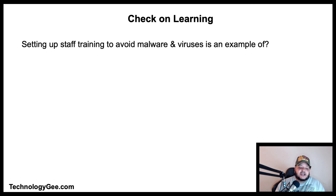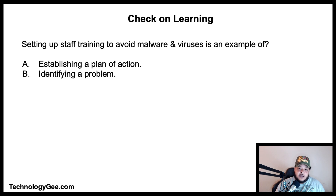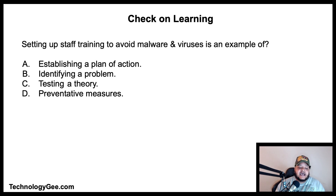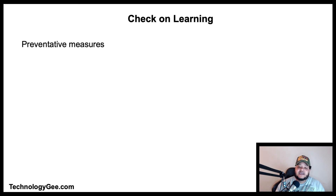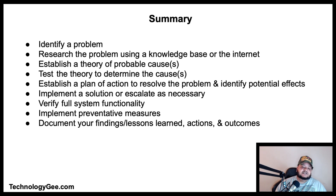Question three: setting up staff training to avoid malware and viruses is an example of what? Is it establishing a plan of action, identifying a problem, testing a theory, or preventative measures? The correct answer is preventative measures. Teaching your staff not to click on random links in emails is very important.